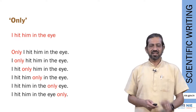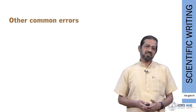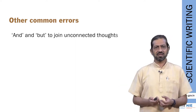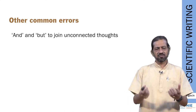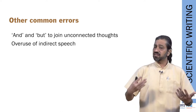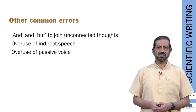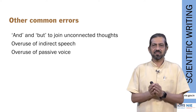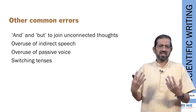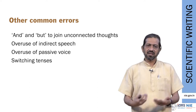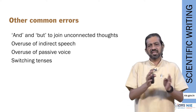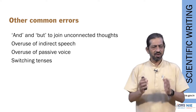Some other common errors: be mindful of where you use 'and' and 'but,' making sure you are not connecting unrelated things. Avoid indirect speech and overuse of passive voice. Remember that different sections of a manuscript are written in different tenses — methods are typically in past tense, results in present or past tense. Maintain consistency within each section, and be careful about whether you are using first person or third person.